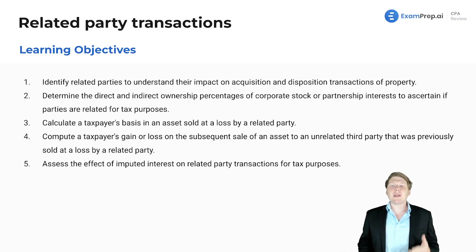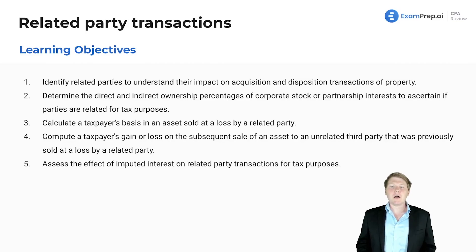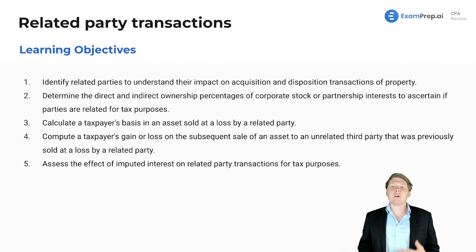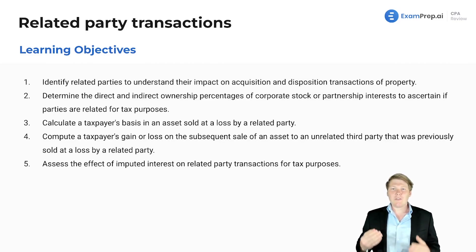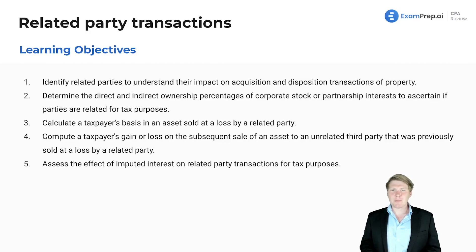We want to determine the direct and indirect ownership percentages of corporate stock or partnership interests to ascertain if the parties are related for tax purposes. For example, if I own 20% of a company and my brother owns 40%, constructively that's as if I own 60%, which has implications for tax purposes as well.